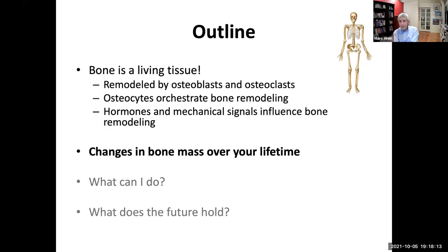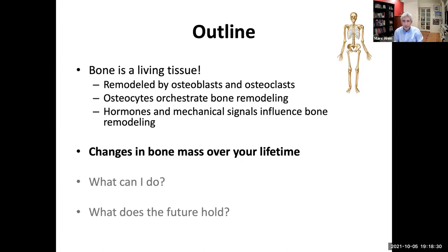That was a quick overview of how we think of bone as a tissue that's always alive and remodeling — we have bone-forming osteoblasts, bone-destroying osteoclasts, and osteocytes, which take information from hormones and mechanical cues to orchestrate bone remodeling. Now moving from science into practice, we'll talk about how bone mass is regulated over your lifetime and what we can do to keep our bones strong.